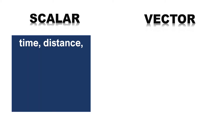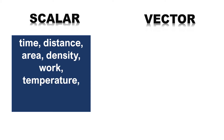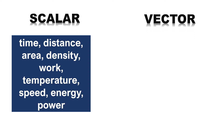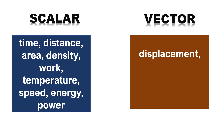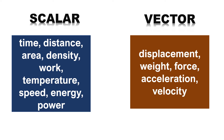Examples of scalar quantities are time, distance, area, density, work, temperature, speed, energy, and power. And for vector quantities, we have displacement, weight, force, acceleration, and velocity.